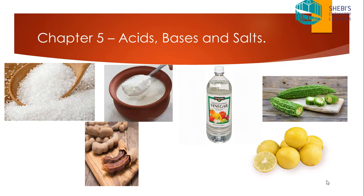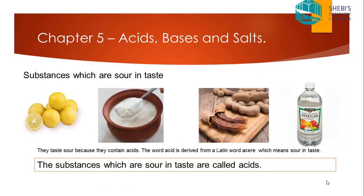Some of the substances share a common taste. The substances which are sour in taste — lemon, curd, tamarind, and vinegar — are sour because they contain acids. The acids present in them give them that sour taste. The word acid is derived from the Latin word 'acer', which also means sour in taste. So the substances which are sour in taste are called acids.